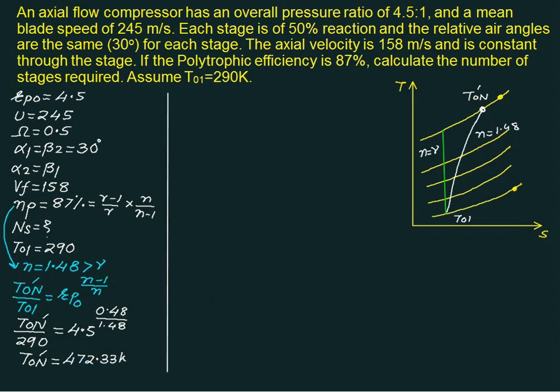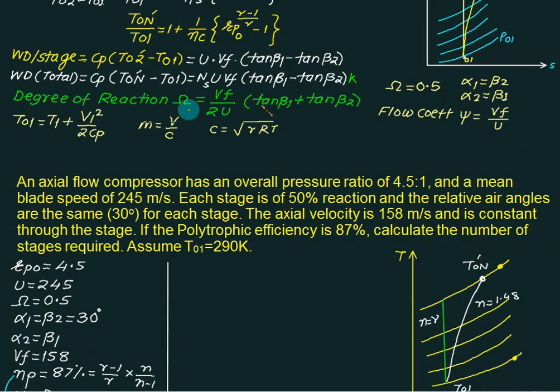To solve further, we will go back to our formula sheet. We can calculate the value of the number of stages. That is this value we can calculate provided we should know the left hand side. Left hand side is known to us. What we do not know only is the angle beta 1. To calculate beta 1, we will use degree of reaction because that is 0.5, because Vf and u is known, tan beta 1 and tan beta 2. We will use this equation first.